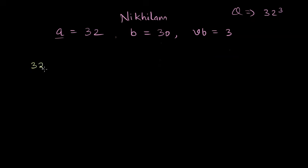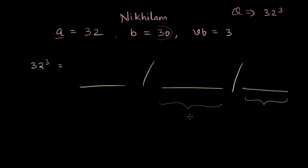Now answer for the cube of 32 will be found in three parts. This is the rightmost part which will be a one digit number because the base has one zero in it. This part also will be a one digit number and if there are more digits in the rightmost part and the middle part, we will carry the remaining part towards left.